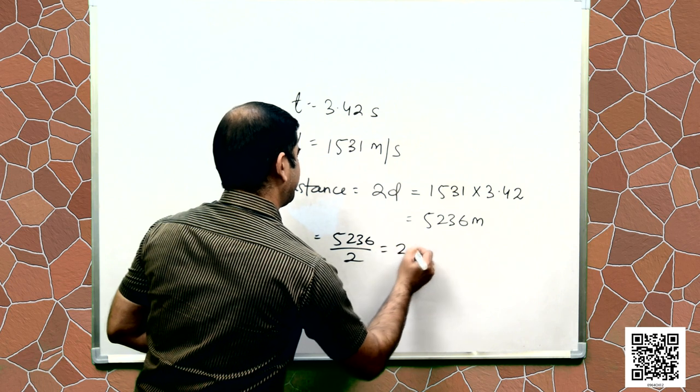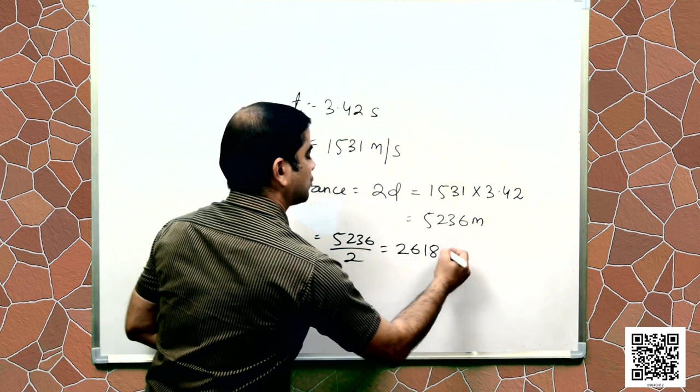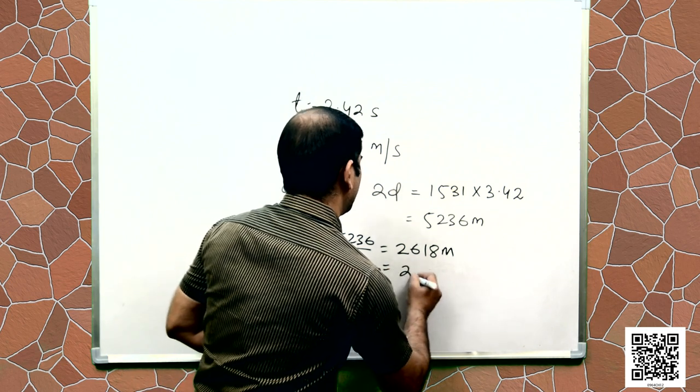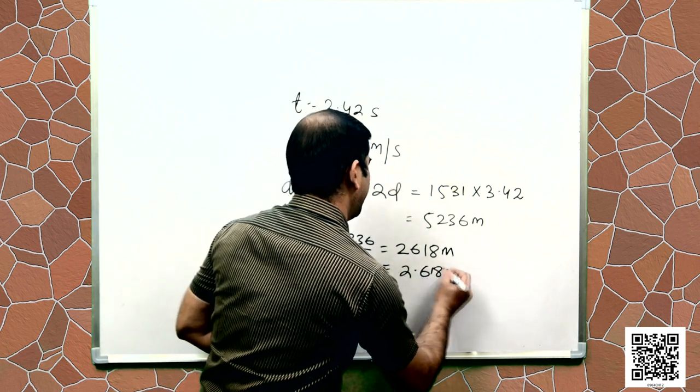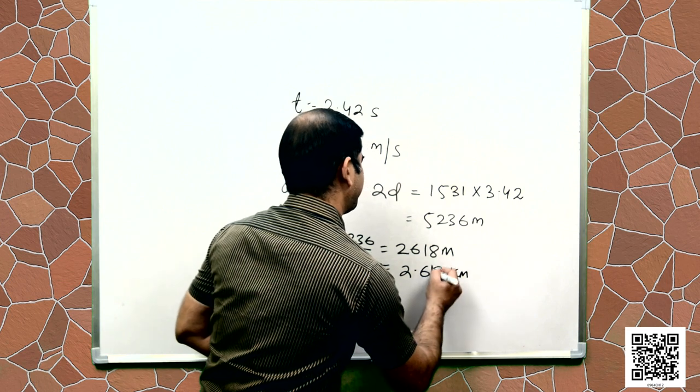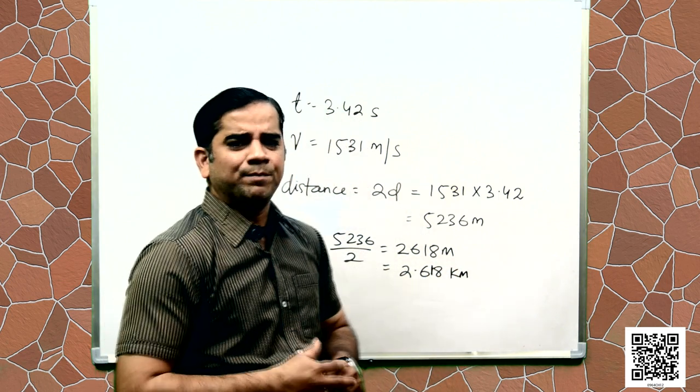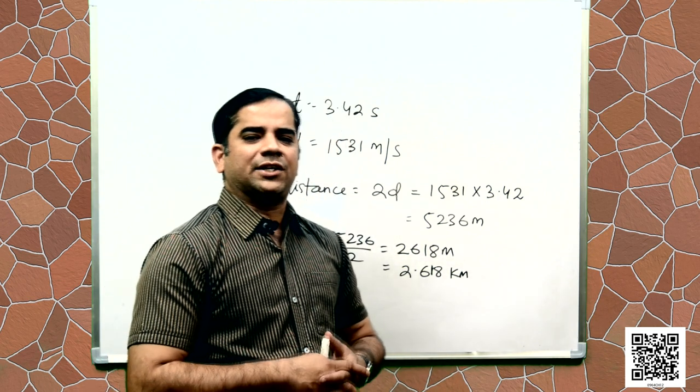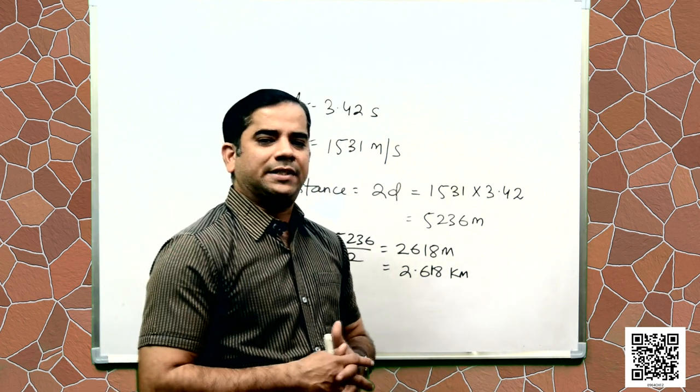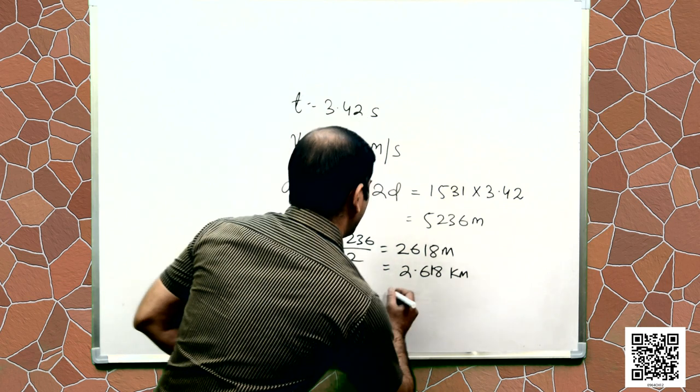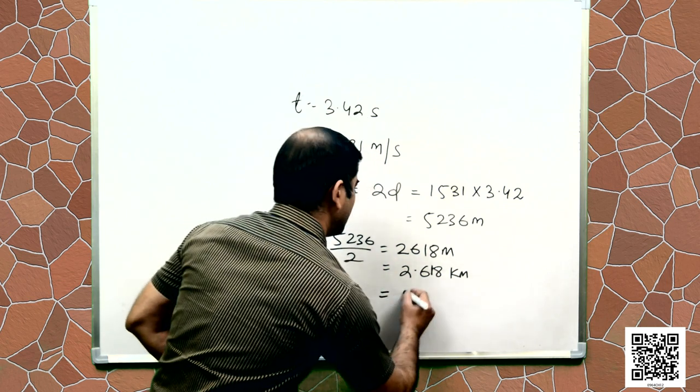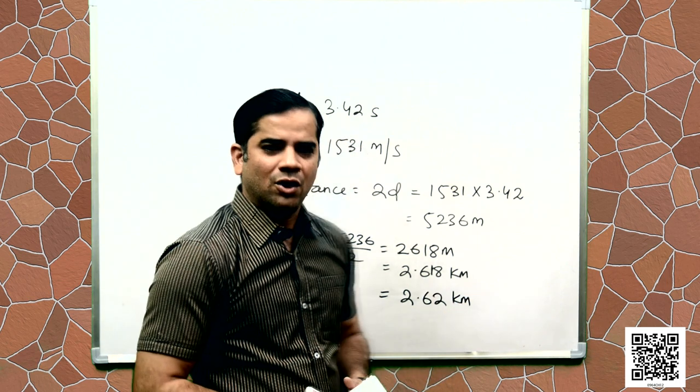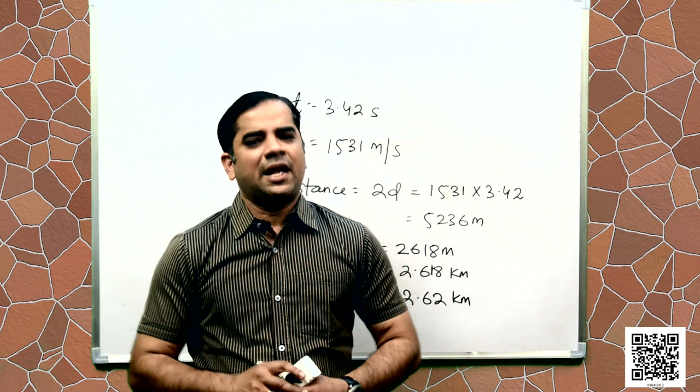So the distance of seabed from the ship is half of this distance. That is equal to 5236 divided by 2, 2618 meter. Or we can say 2.618 kilometer. Thus the distance of the seabed from the ship is 2.618 kilometer or when we round it up it becomes 2.62 kilometer. Hope you understand this example.